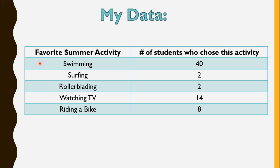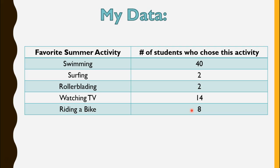The question was about your favorite summer activity. The options were swimming, surfing, rollerblading, watching TV, and riding a bike. And you can see here's the data — these are the number of students who chose these activities. You can get some information by looking at this table and analyze it, but what's really nice is when you make it into a bar graph you can visually see it a little bit better.